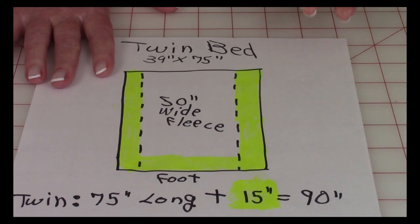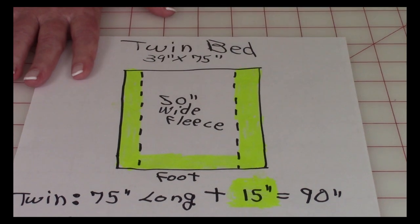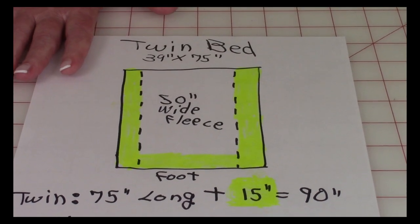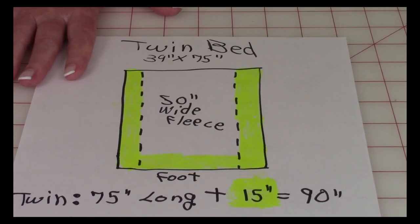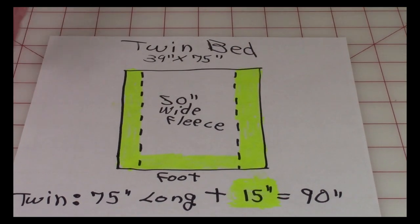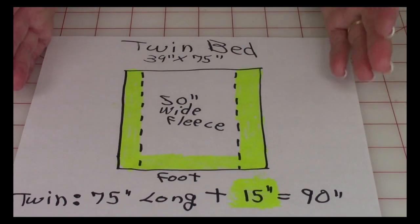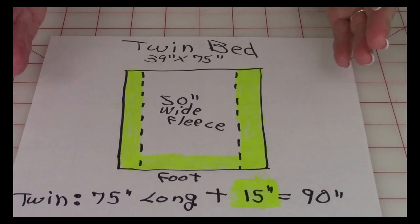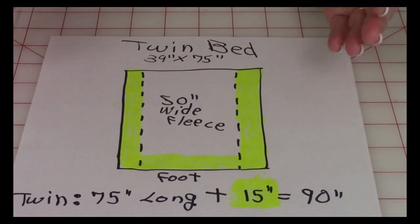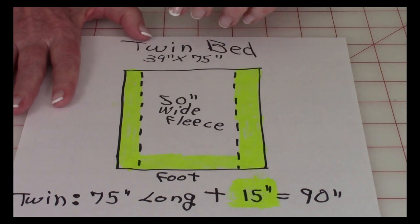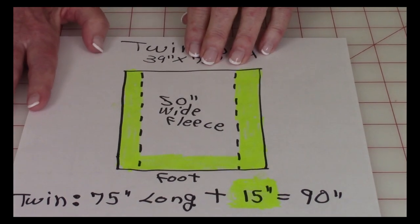I recommend for a twin bed you would use 50 inch wide fleece. Now that 50 inch wide fleece will go over the side of the twin bed about five inches. But that's not going to cover that whole mattress on the side. It won't go all the way to the floor.